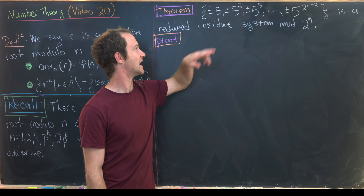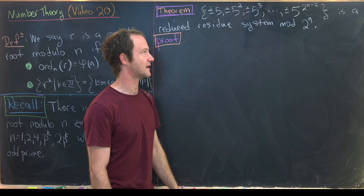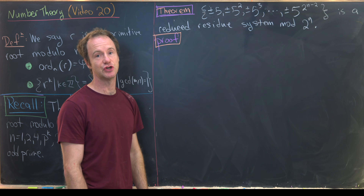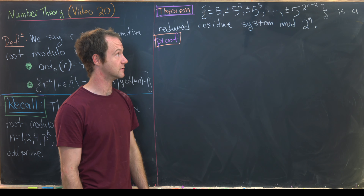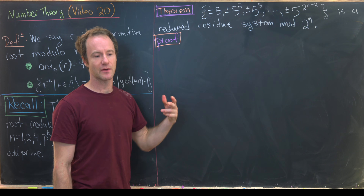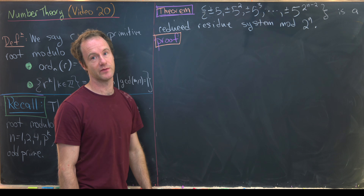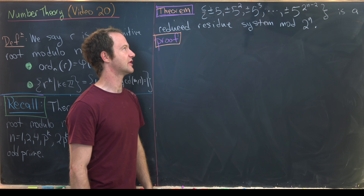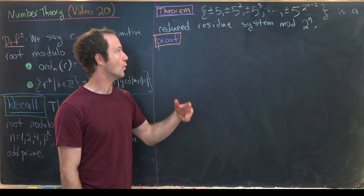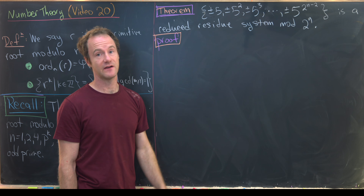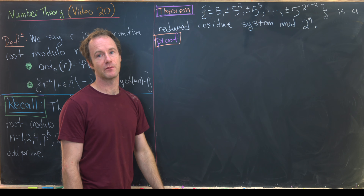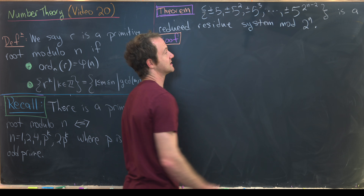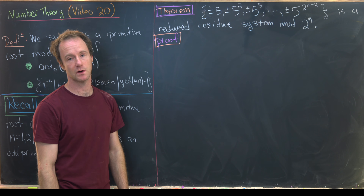The set is {±5, ±5^2, ±5^3, …, ±5^(2^(n−2))}. Rather than being generated by a single primitive root, everything here is generated by two elements: 5 and −1, by multiplying through by 5 and −1.